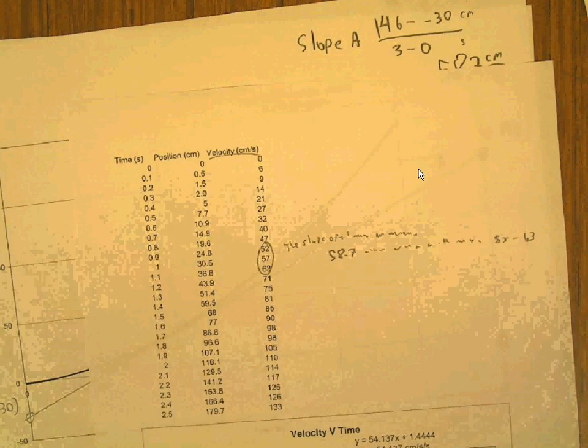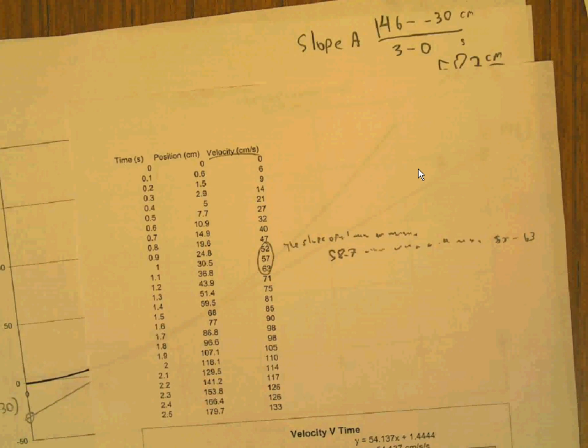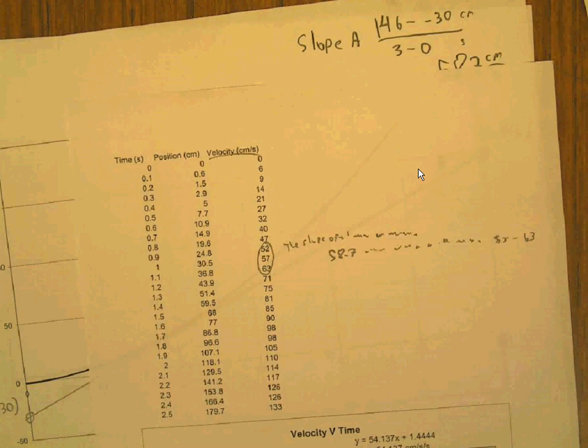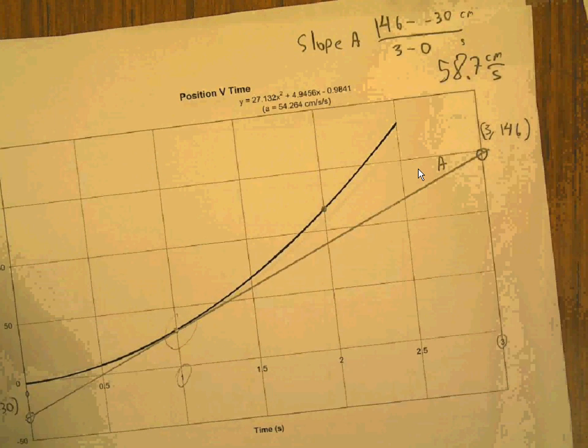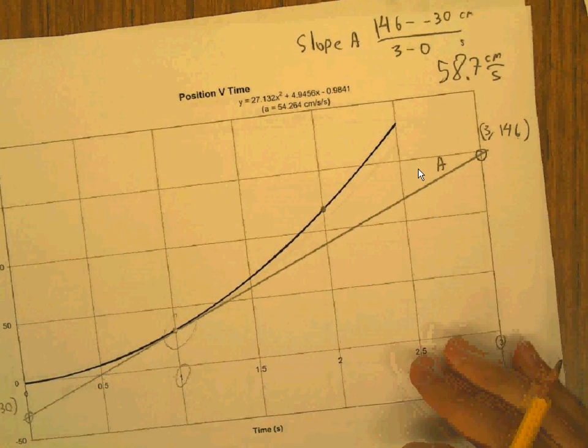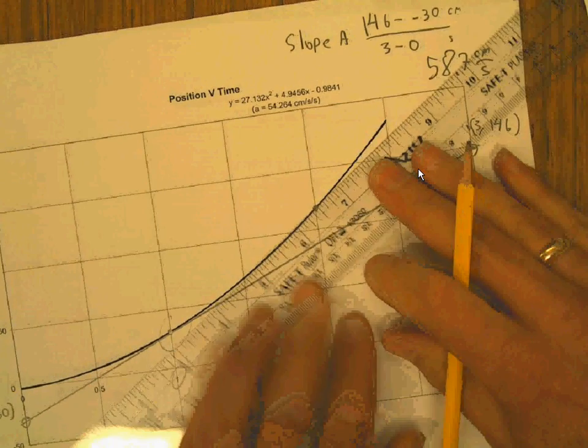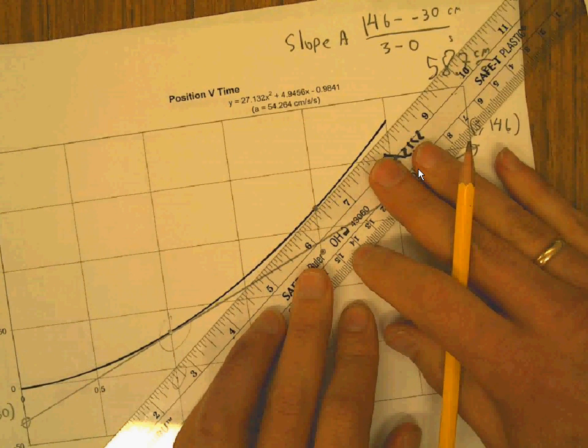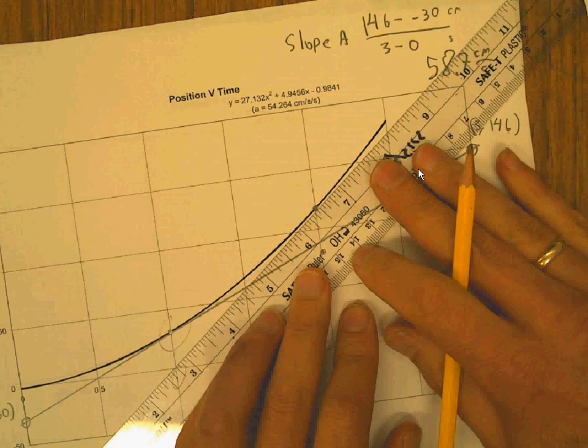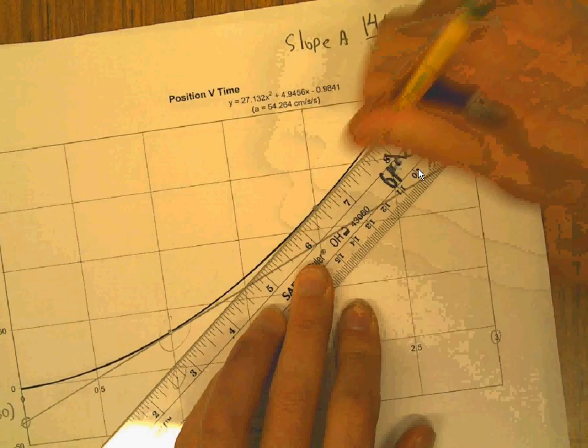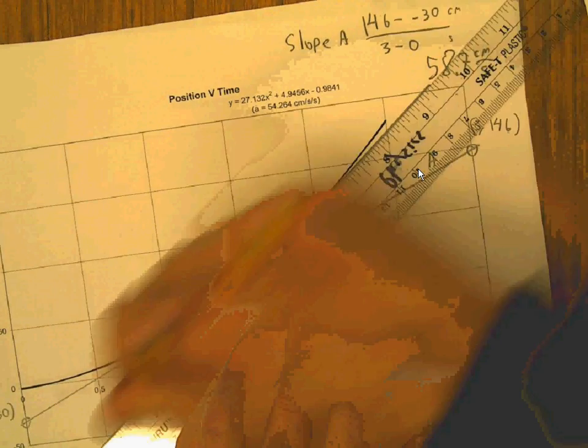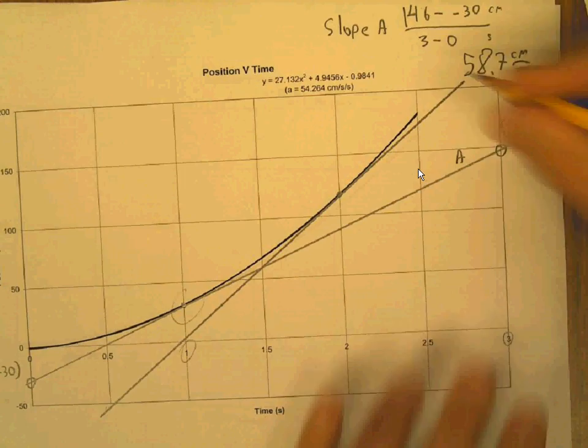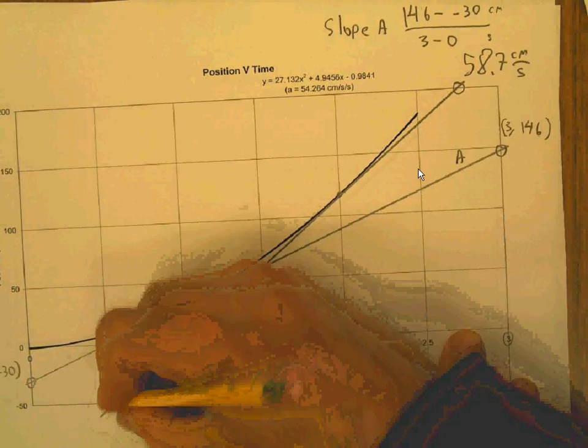And then of course, now we need to also do a tangent line at two seconds. So let's draw that tangent line. Doesn't that look right? That looks good, doesn't it? And maybe a little more like that. You're going to be a little bit off because we're doing this by hand. That's a beautiful tangent line.